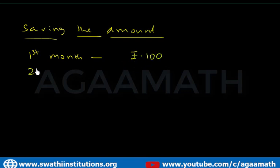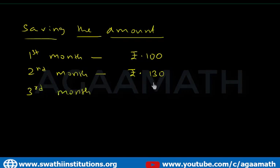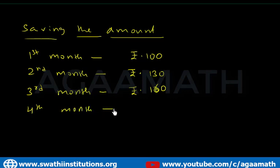In the second month I increased my savings to 130 rupees. In the third month I increased my savings to 160 rupees. In the fourth month, can you guess? Yes — it is 190 rupees. The savings increase by 30 rupees each month.